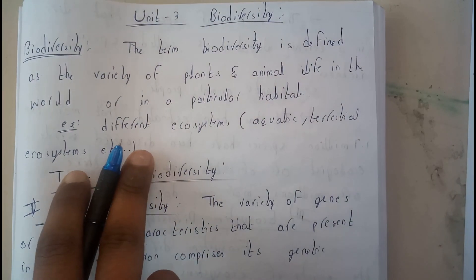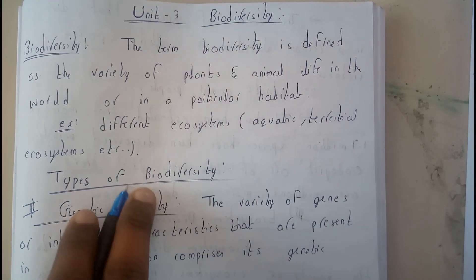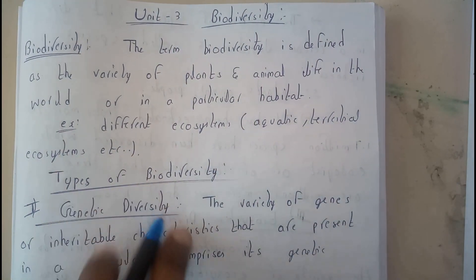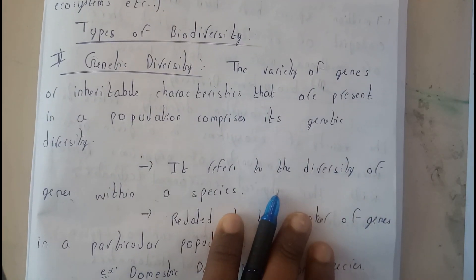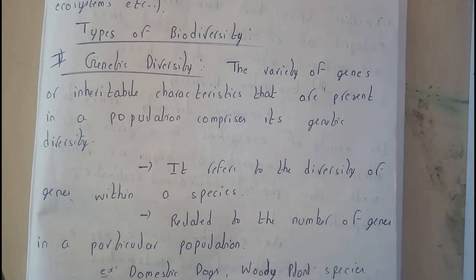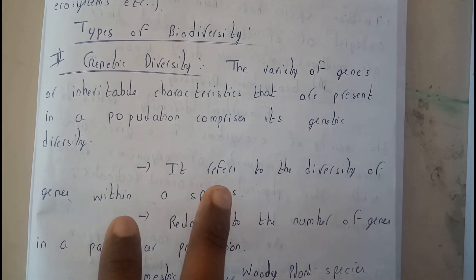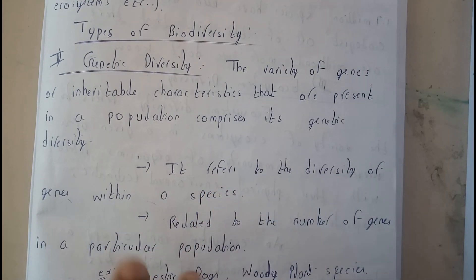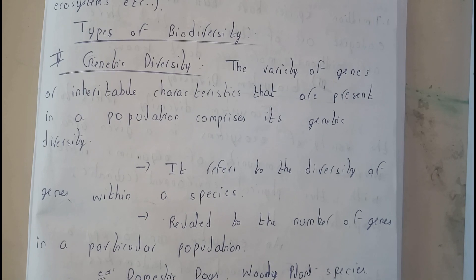Different examples include different types of ecosystems like aquatic, terrestrial ecosystems, etc. Biodiversity is basically divided into two types. One of them is genetic and another one is species. Let us go through genetic first.